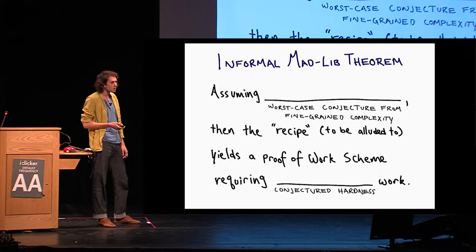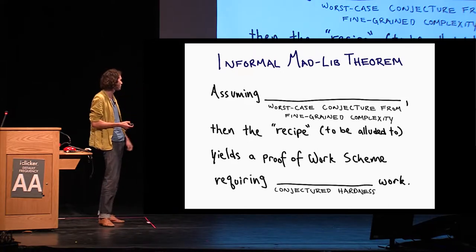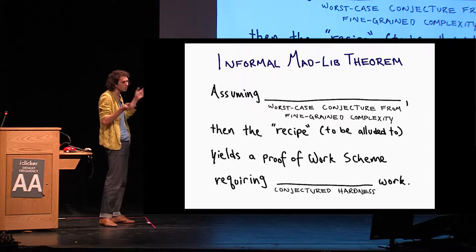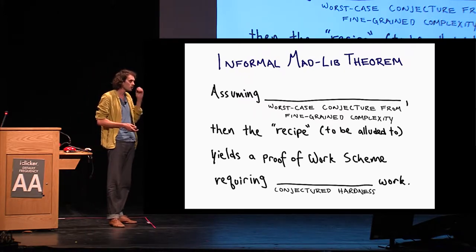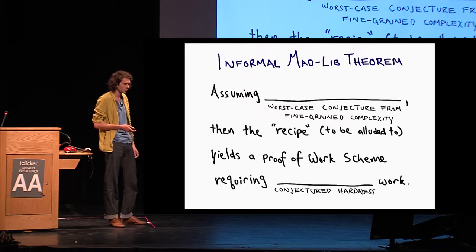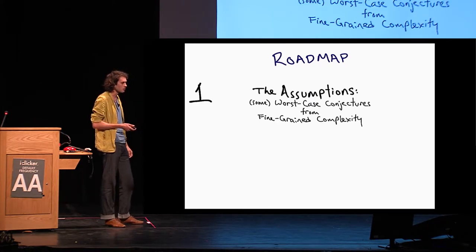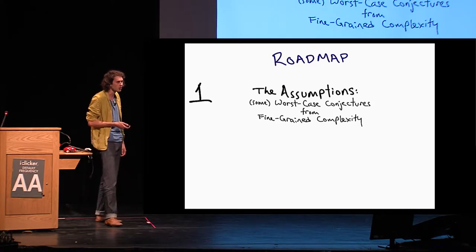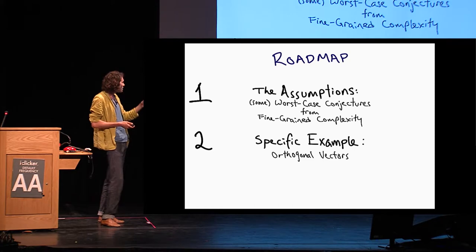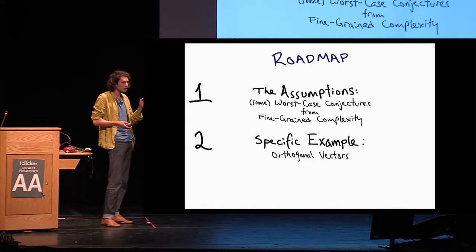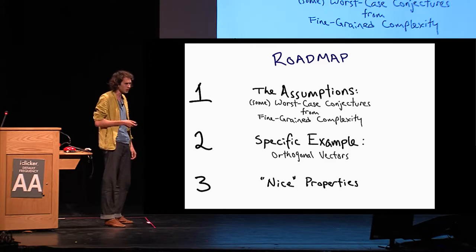So statements we prove in this work can fit into this generic bad lib format. Assuming some worst case conjecture from fine-grained complexity, it's not totally generic—we instantiate it with specific conjectures, but there are a variety of them. Then this recipe that I'm about to describe yields a proof of work scheme that requires amount of work that corresponds to the conjectured hardness. What's the roadmap for the rest of this talk? First, I'm going to guide you through some of these assumptions, conjectures from fine-grained complexity. Hopefully you were at Virginia's talk on Sunday, but if you weren't or you don't remember, I'll jog your memory.